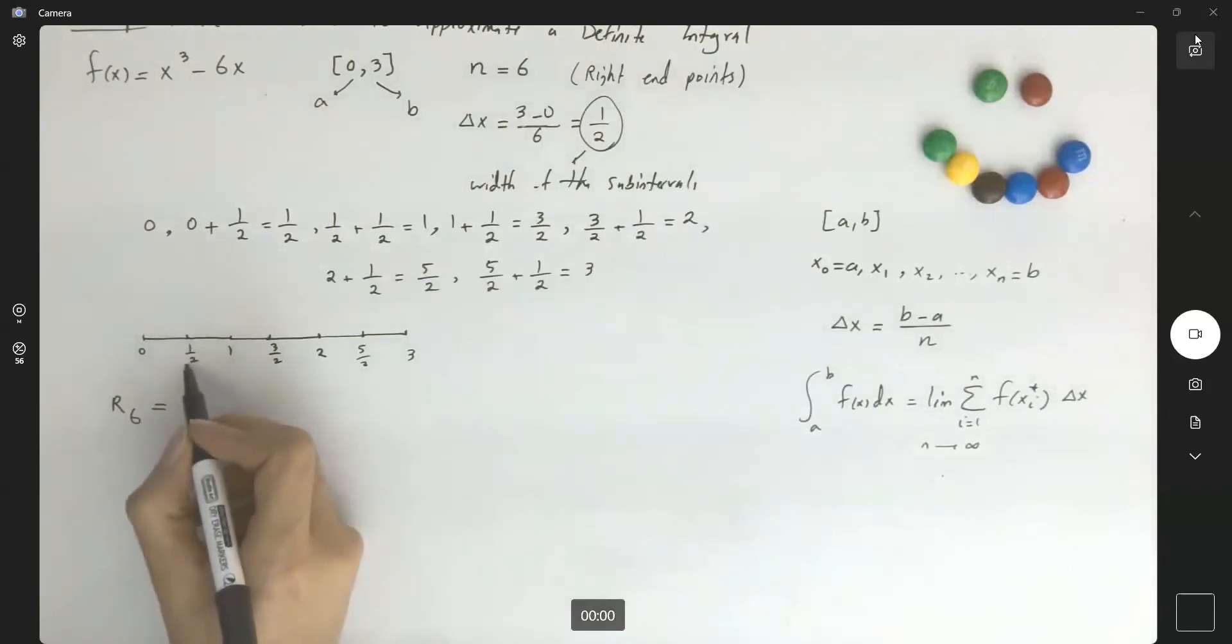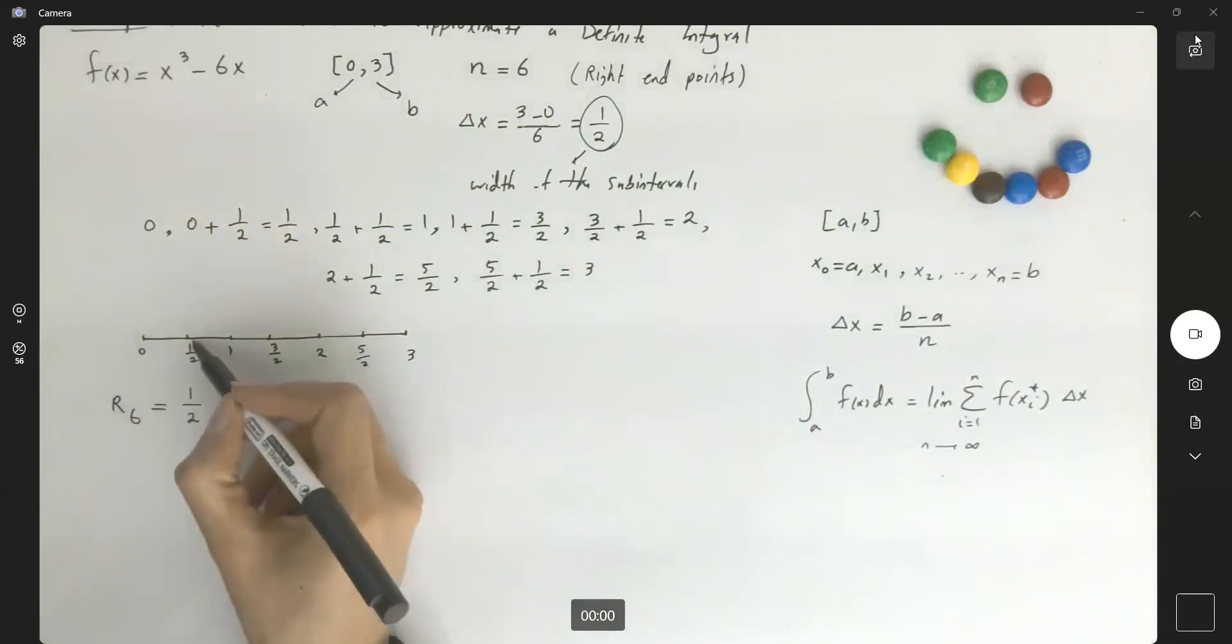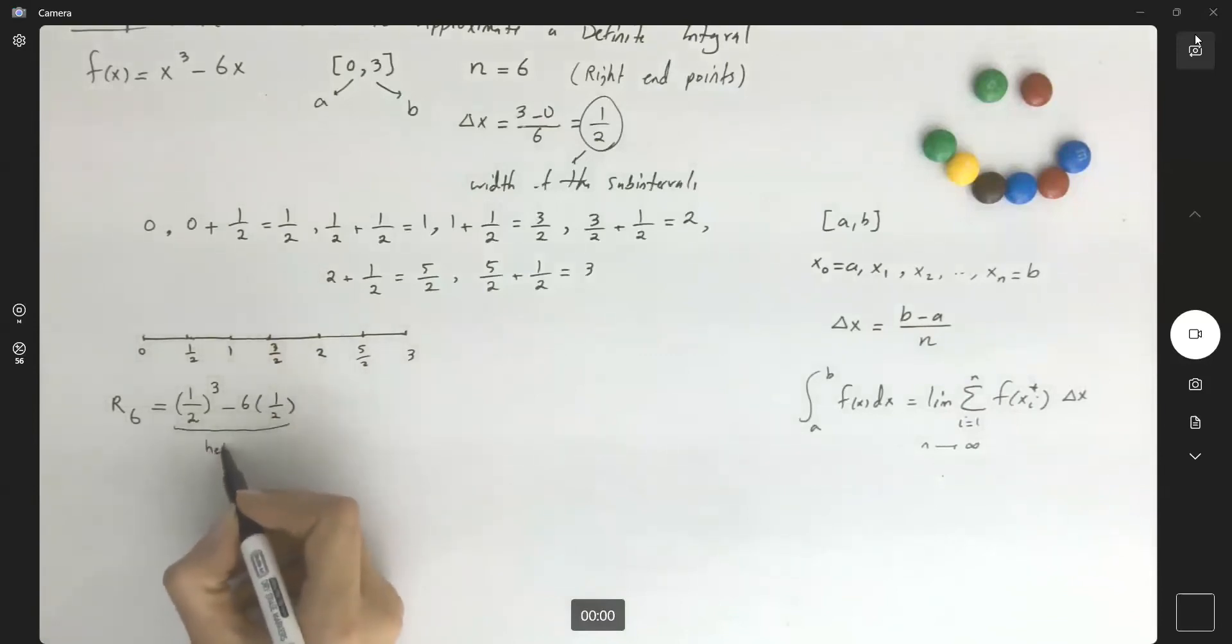The right endpoint is a half. So I have a half. I need to enter a half into this function to find the height. So I have a half to the third minus 6 times a half. This is your height, multiplied by the width, which is a half, plus. So we're done with the first subinterval.